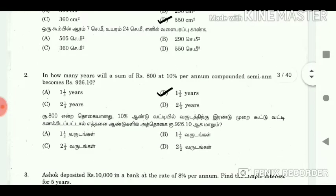2. In how many years will a sum of Rs. 800 at 10% per annum, compounded semi-annually, becomes Rs. 926.10? Answer: 1 and 1/2 years.